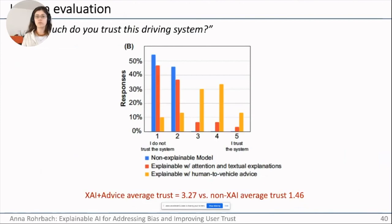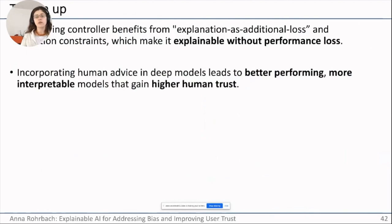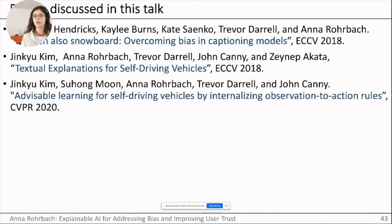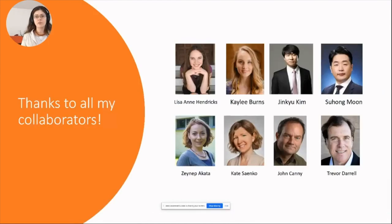Overall trust was improved most significantly with the advisable design. To summarize: adding explanation as an additional loss leads to an explainable model without losing performance; the advisable design actually improves performance, makes the model more interpretable, and yields higher human trust. I've covered several papers in this talk — please check them out for more details. I'd like to thank my collaborators, and I'm happy to take any questions.